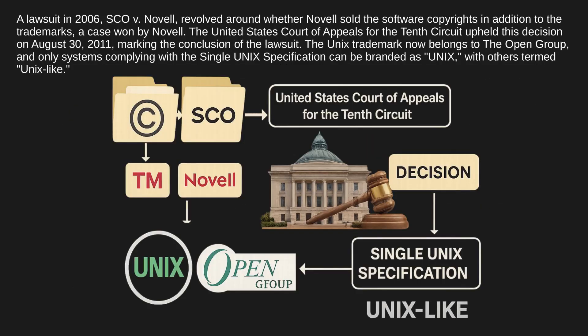A lawsuit in 2006, SCO versus Novell, revolved around whether Novell sold the software copyrights in addition to the trademarks — a case won by Novell. The United States Court of Appeals for the 10th Circuit upheld this decision on August 30th, 2011, marking the conclusion of the lawsuit. The Unix trademark now belongs to the Open Group, and only systems complying with the Single Unix Specification can be branded as 'Unix,' with others termed 'Unix-like.'